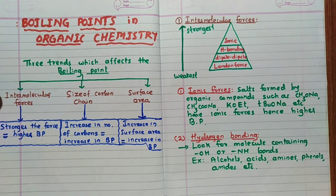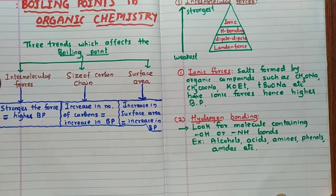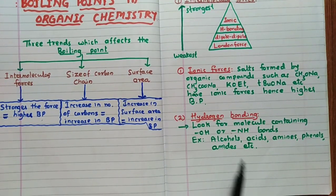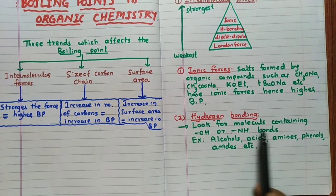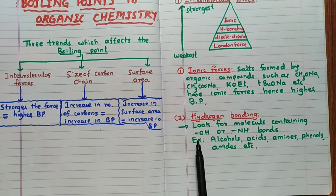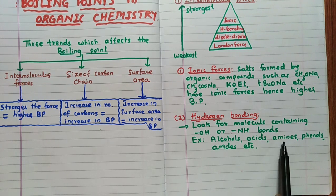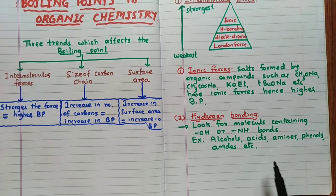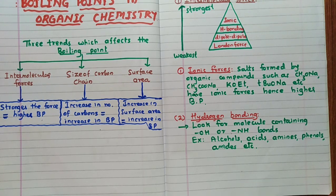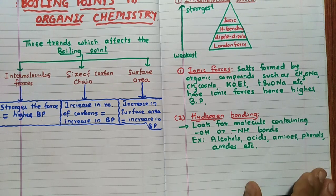For hydrogen bonding, look for molecules containing OH or NH bonds. Alcohols, acids, amines, phenols, and amides will have higher boiling points because of the hydrogen bonding present between their molecules.